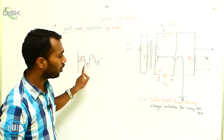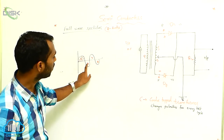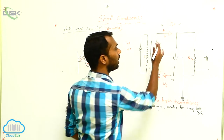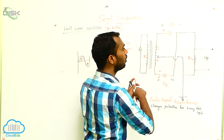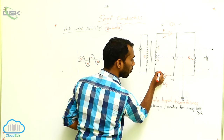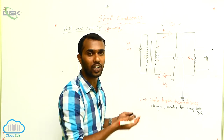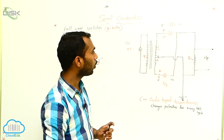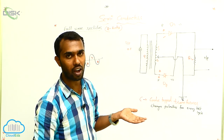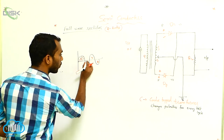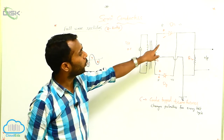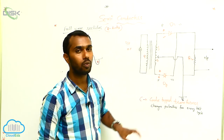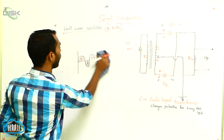The center tapped transformer changes polarities for every half cycle. When this half cycle is completed, check for the negative half cycle. Automatically, A becomes negative and B becomes positive — the center tapped transformer changes this. Now for the negative half cycle, diode D1 is in reverse bias and diode D2 is in forward bias. You should remember that point.